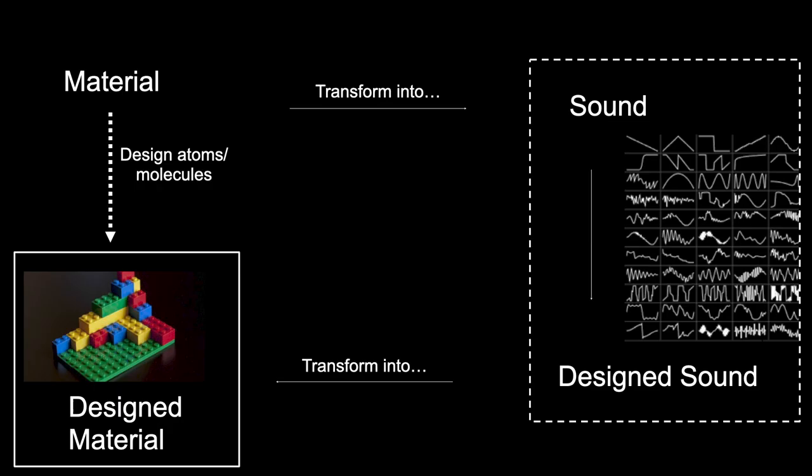One way to do that is to translate matter — because matter has equivalences to vibrations — into sound, and use sound as a way of designing new matter. We have a material composition or structure, understand it as a set of vibrations, compute those vibrations, make them into audible sound, and manipulate the sound. We can then use a reverse translation to move sound back into matter, solving the design problem of assembling building blocks — kind of like Lego — into structures.